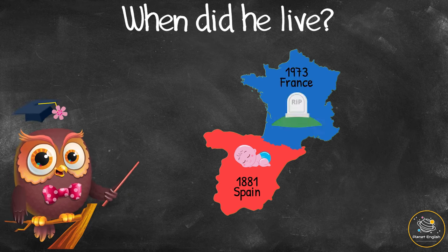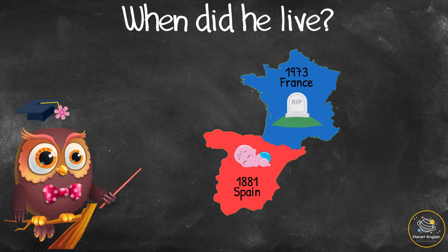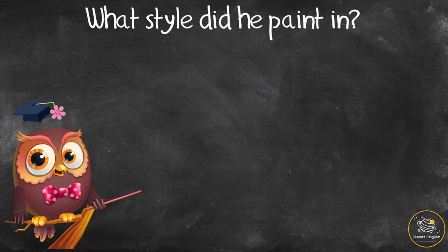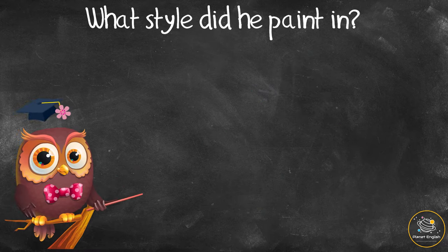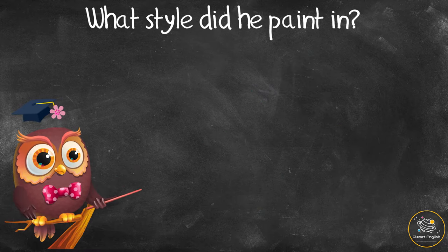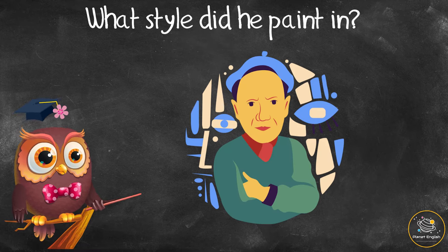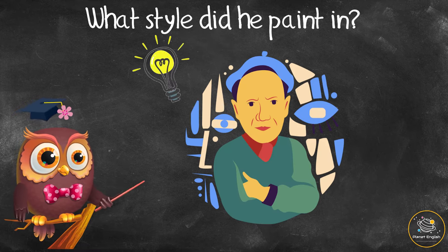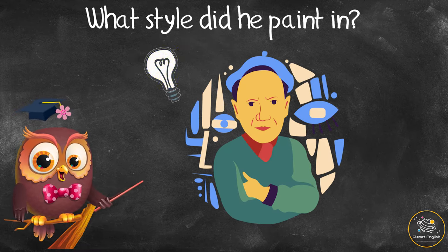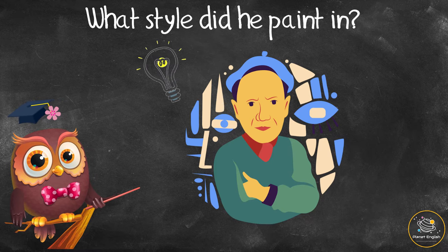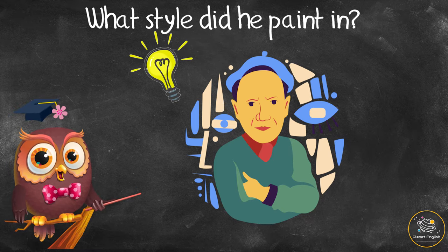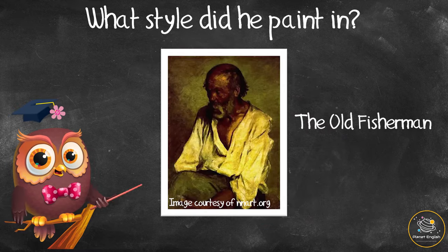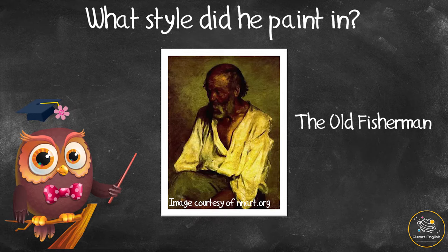When did he live? He was born in 1881 in Spain and he died in 1973 in France. What style did he paint in? Picasso loved to experiment and try out new ideas and he painted in many different styles.